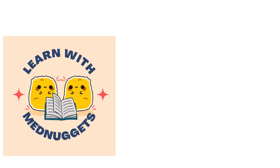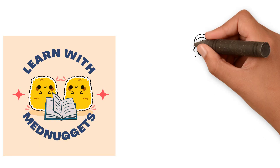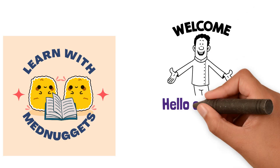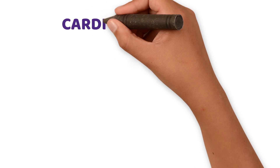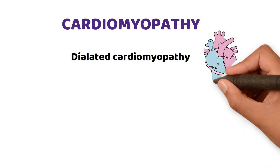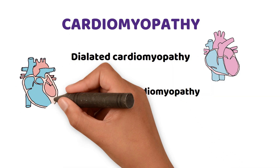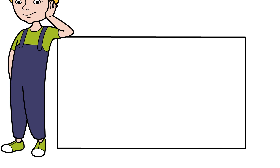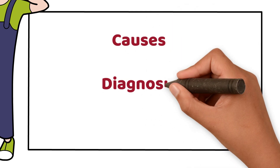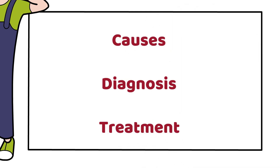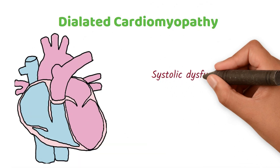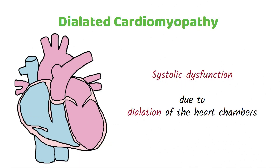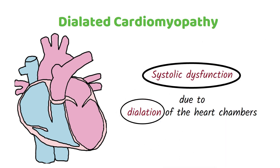Hi everyone, welcome back to Learn with Med Nuggets. Today we're going to learn about cardiomyopathy. There are three types of cardiomyopathy: dilated cardiomyopathy, hypertrophic cardiomyopathy, and restrictive cardiomyopathy. In this video we will talk about each of their causes, diagnosis, and treatment.